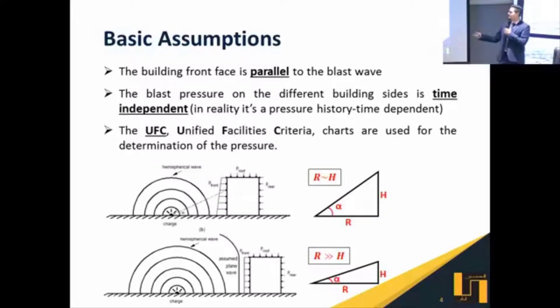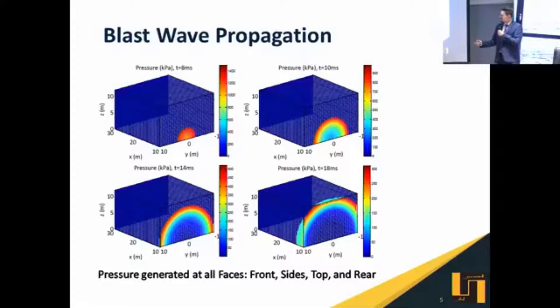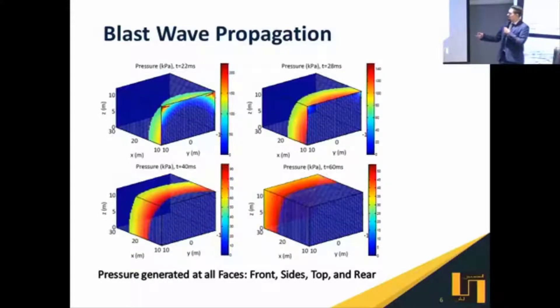The third assumption is that we are referring to the UFC code, Unified Facilities Criteria, for our problem solving. This is a schematic view that shows the propagation of the blast wave on the front face, and then it expands towards the edges or boundaries of the front face, then starts engaging with the side walls, roof wall, and finally ends up with the rear face pressure.